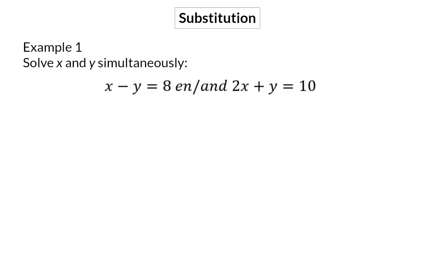That means there will be four different options of variables to get on their own. I'm going to choose to use the first equation, and in this equation I'm going to get x alone on one side. That means on the right I will have 8 plus y. This equation now says that x has the same value as 8 plus y, and that is why we can use the second equation and substitute x with the value 8 plus y.